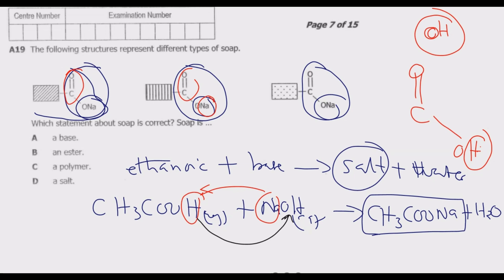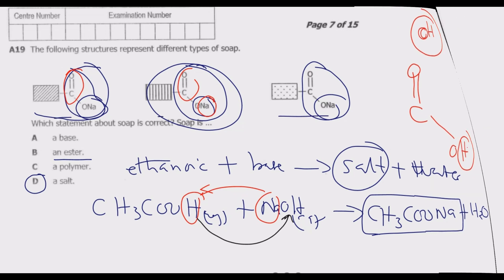So ideally a soap is a salt, which is option D. A soap is not a base, not an ester (because an ester requires reacting an alcohol with a carboxylic acid), and not a polymer (because polymers require addition of monomers).